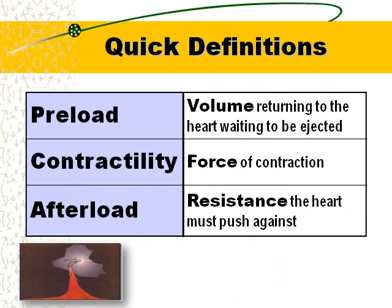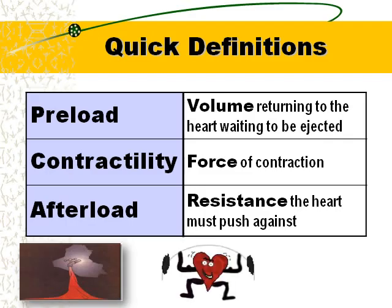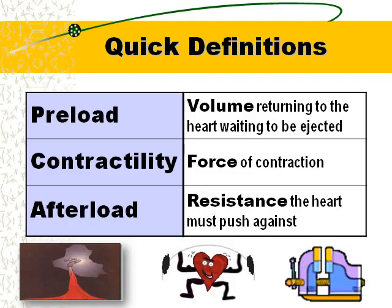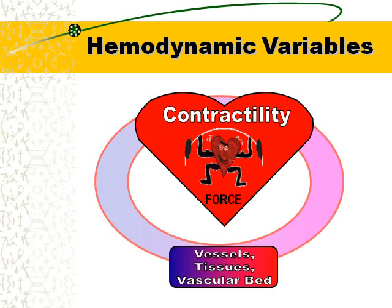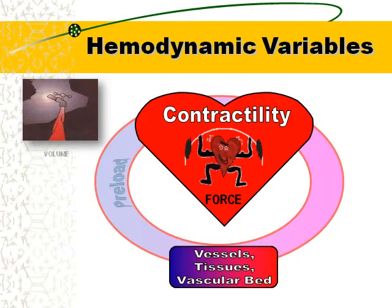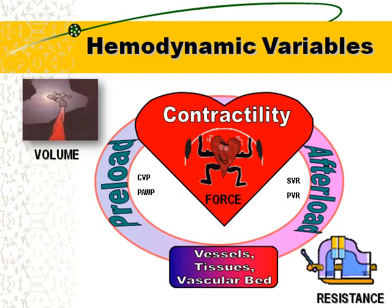Preload is the volume of blood returning to the heart from the venous side, waiting to be ejected. Contractility is the force of contraction — how well the heart is beating. Afterload is the resistance that the heart has to push out against the vessels: are the vessels clamped down or are they wide open? Here's a picture of how I view hemodynamics: the heart in the middle, volume dumping in as preload, and blood coming out against the afterload or resistance.